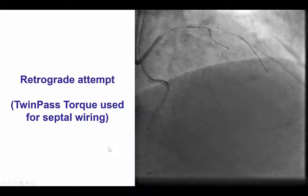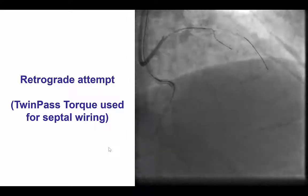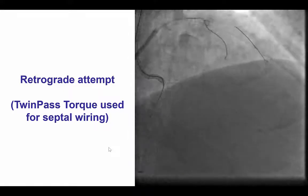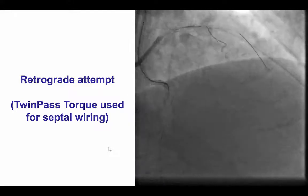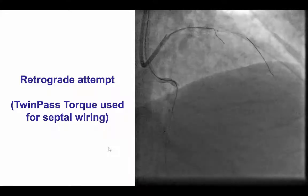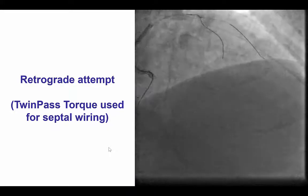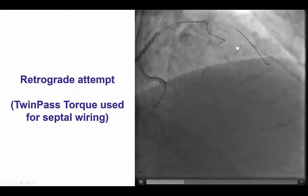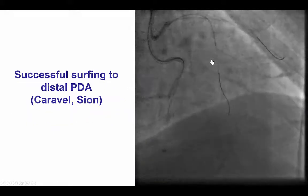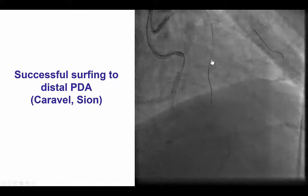Unfortunately, this was unsuccessful, and as a result we decided to try retrograde crossing. We had some difficulty entering into the septal branch; however, that was successful after using the Twin-Pass Torque microcatheter, which is a new dual-lumen microcatheter with good torque control. By turning the proximal hub, you can direct the exit point of the over-the-wire lumen. By doing that, we were then able to advance a guide wire into the septal branch and then performed surfing, using a Caravel microcatheter and a Sion guide wire.